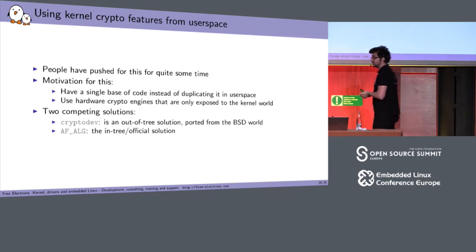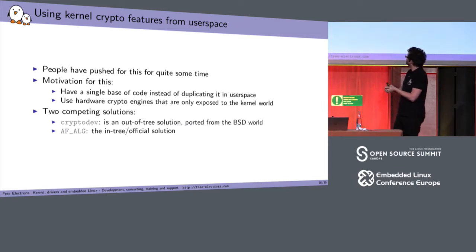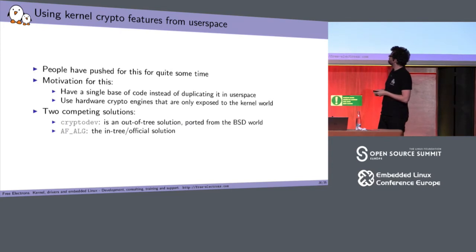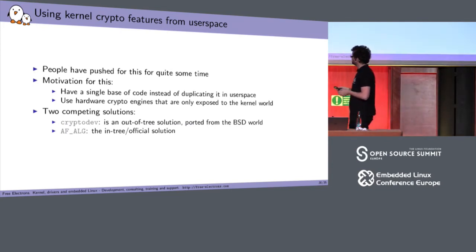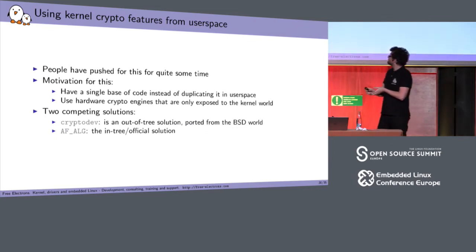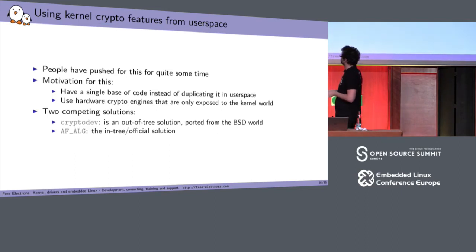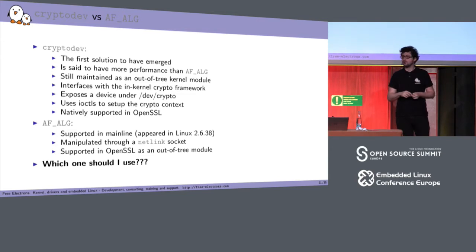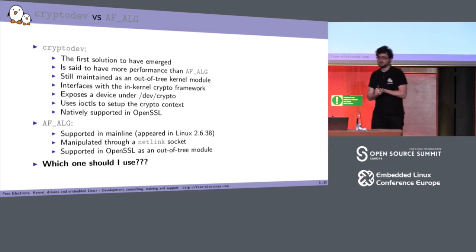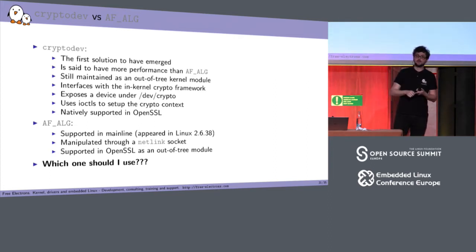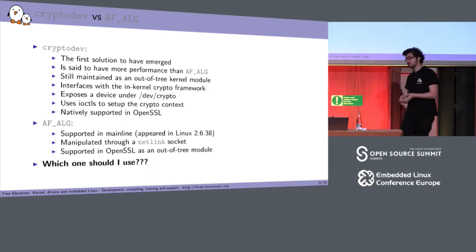Some people want to use crypto engines from userspace and have pushed for a long time to have something in the kernel to expose those crypto features. Currently there are two competing solutions: the cryptodev approach, which is not mainline — which is not ideal — and AF_ALG, which is mainline. The first solution to emerge was cryptodev, taken from the OpenBSD world, which exposes a device under /dev; from userspace you use IOCTLs to set up the context, send data, and so on.